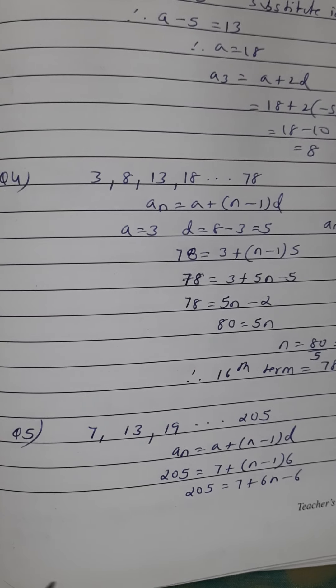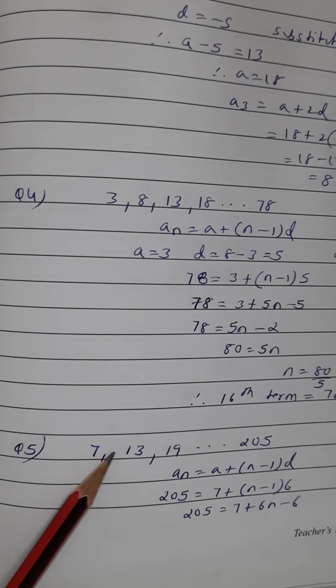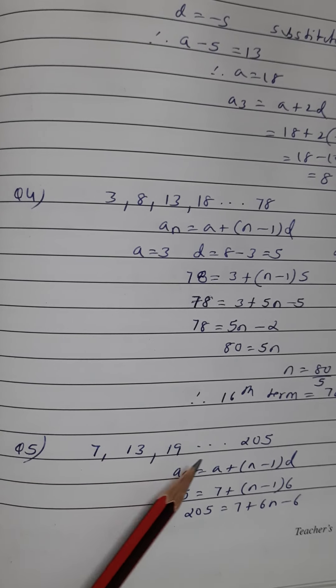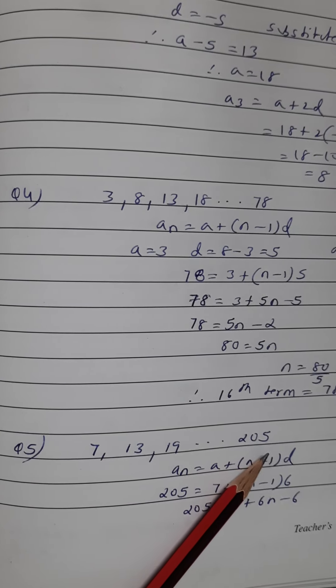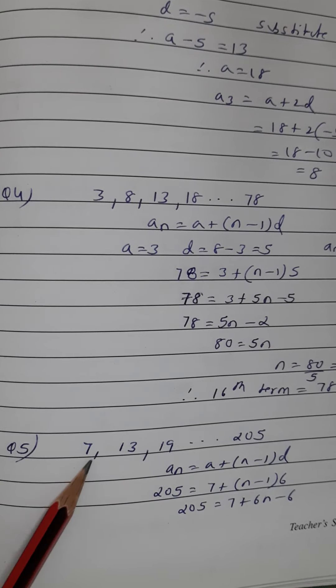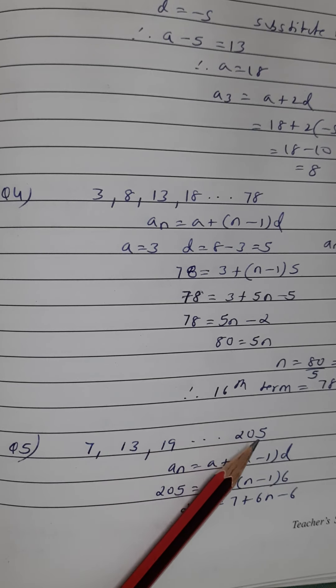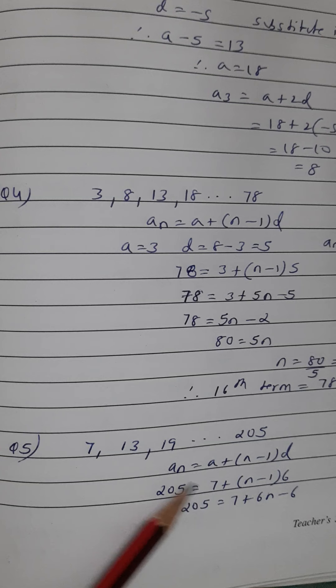Then the fifth question. In the fifth question, look, what is there? Again there is a series given: 7, 13, 19, and then again up to 205. You have to find out how many terms are there in this series up to 205.